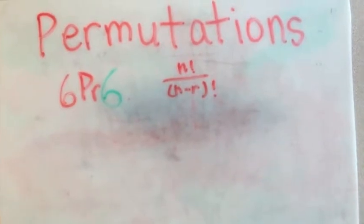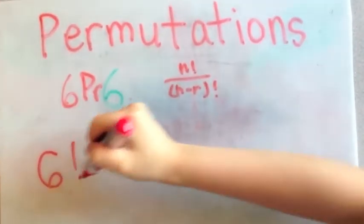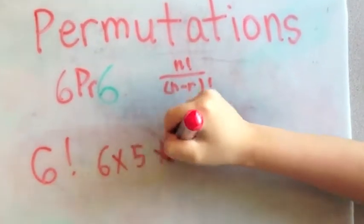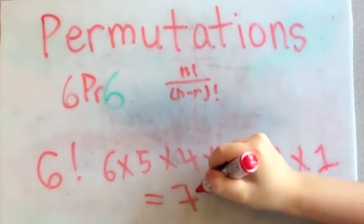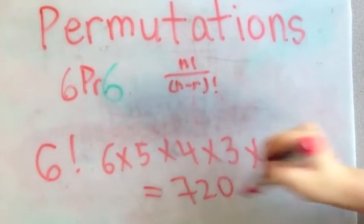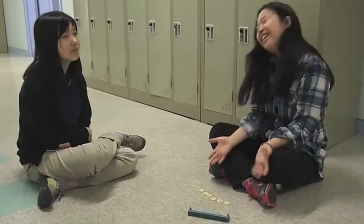So back to sorting banana. We would use 6 factorial, and that would make 720. 720 different ways of arranging the letters in banana. See?